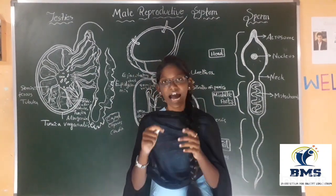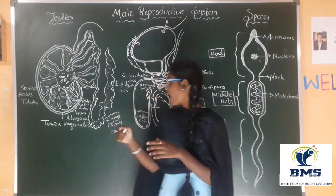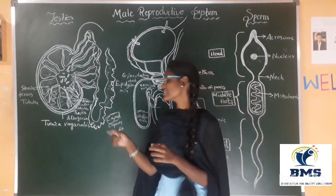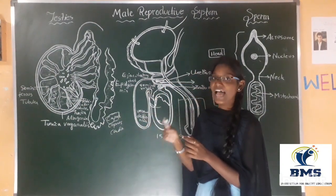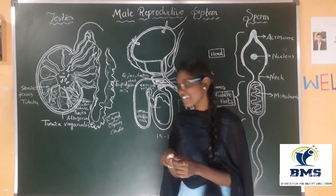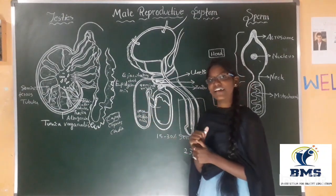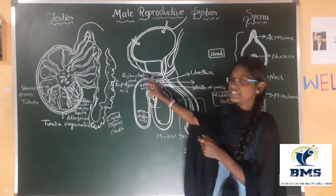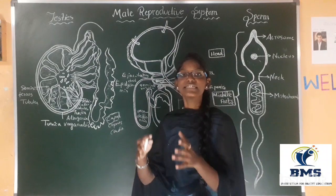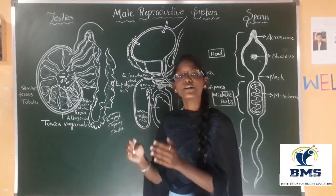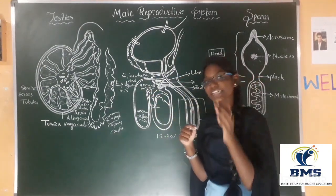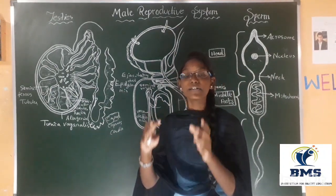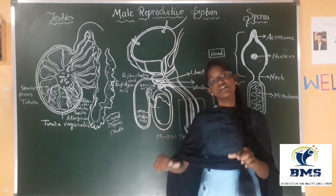The sperm is stored in the caput until it has to go outside the body. After that, it enters into the vas deferens — a long, muscular tube. The sperm travels through the vas deferens and mixes with the seminal fluid. The seminal vesicle gives 60% of the fluid to this sperm. Fructose is very helpful for this sperm because when it goes outside the body, it gives energy for the sperm to move forward.